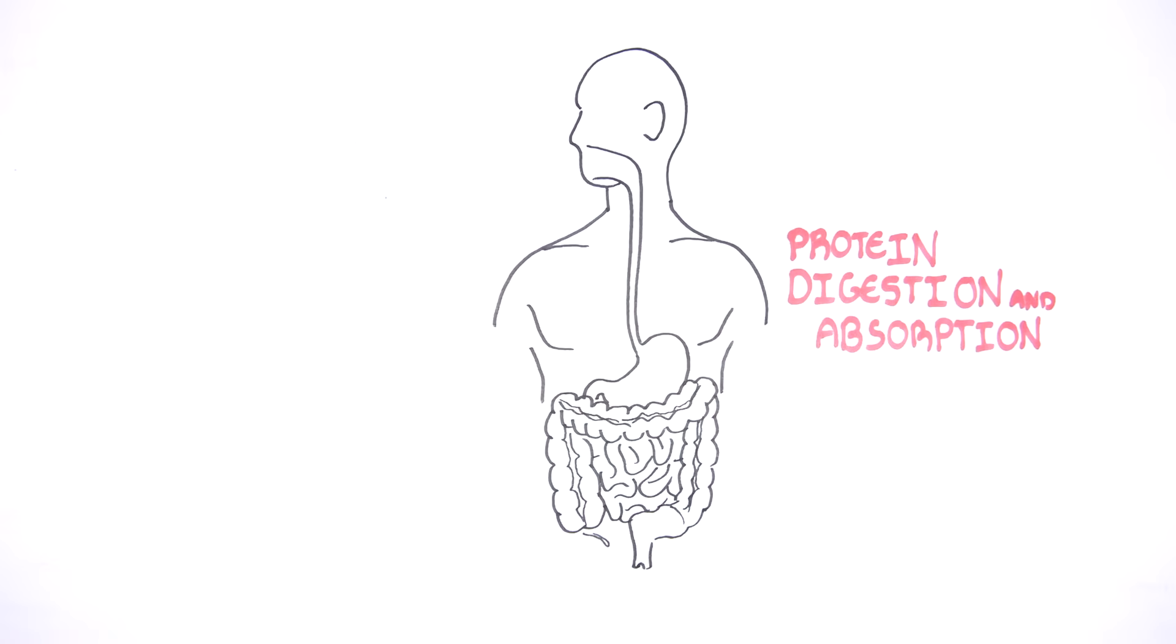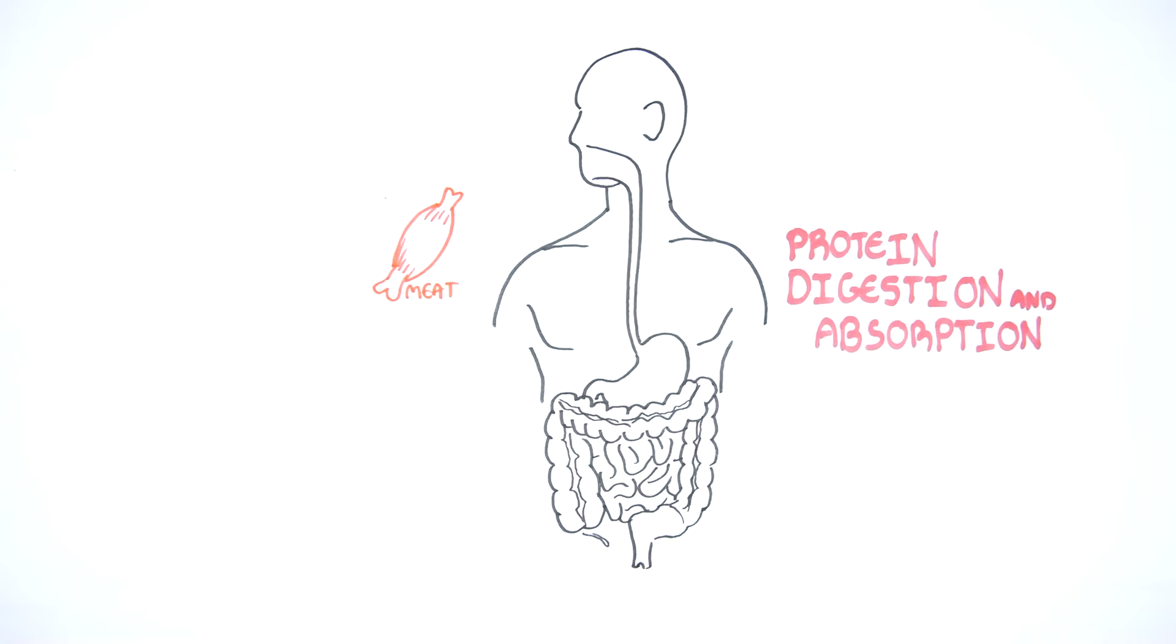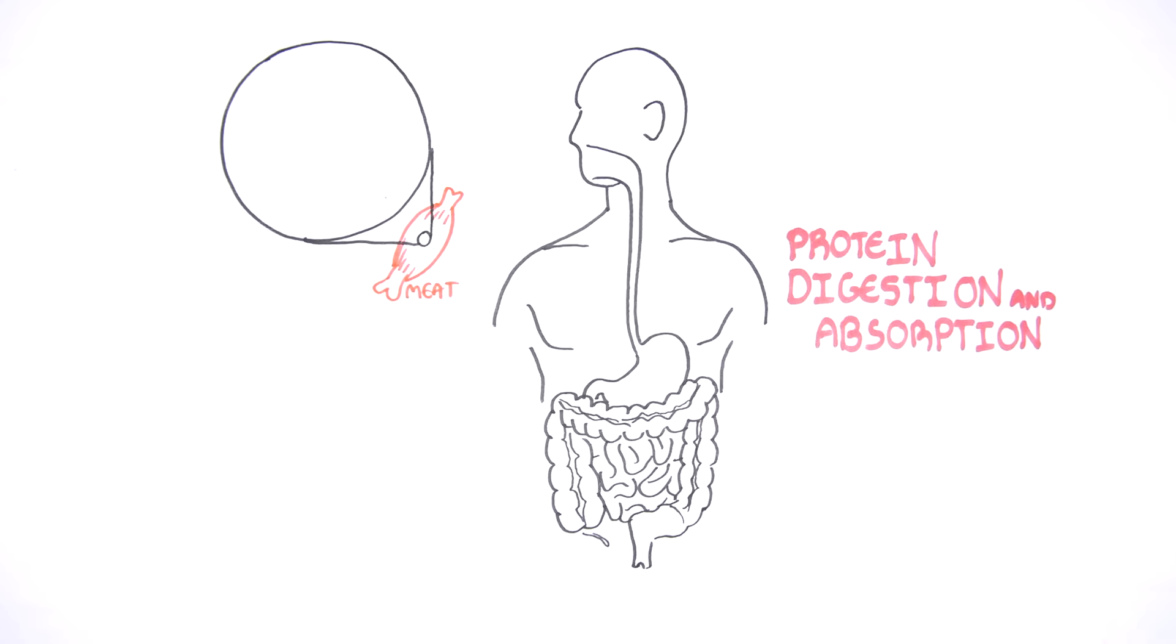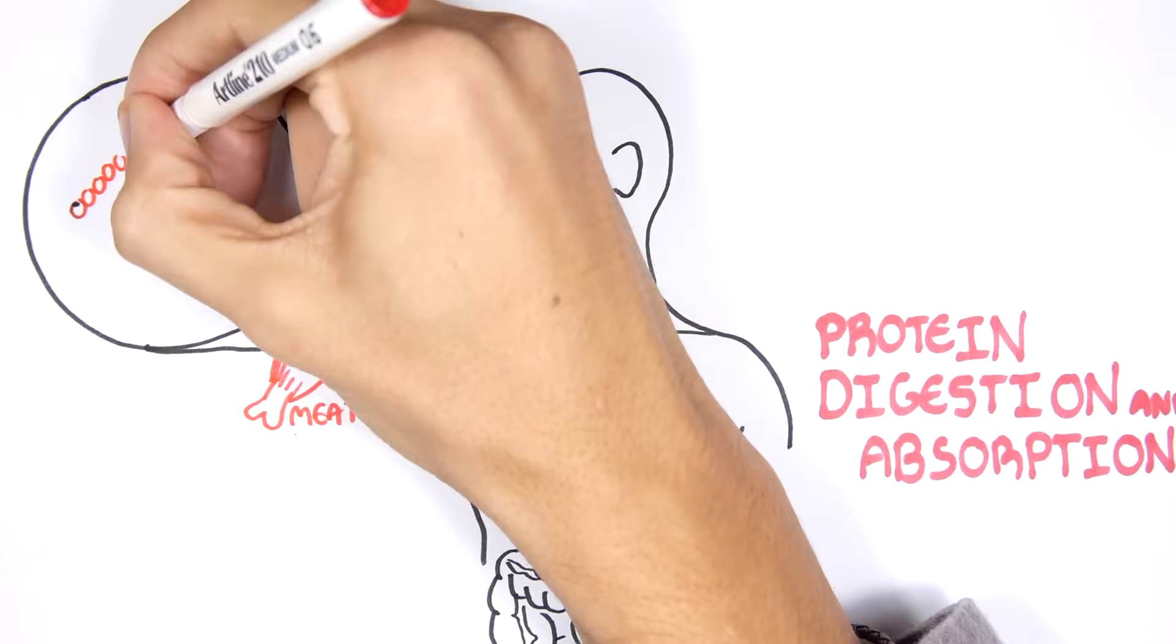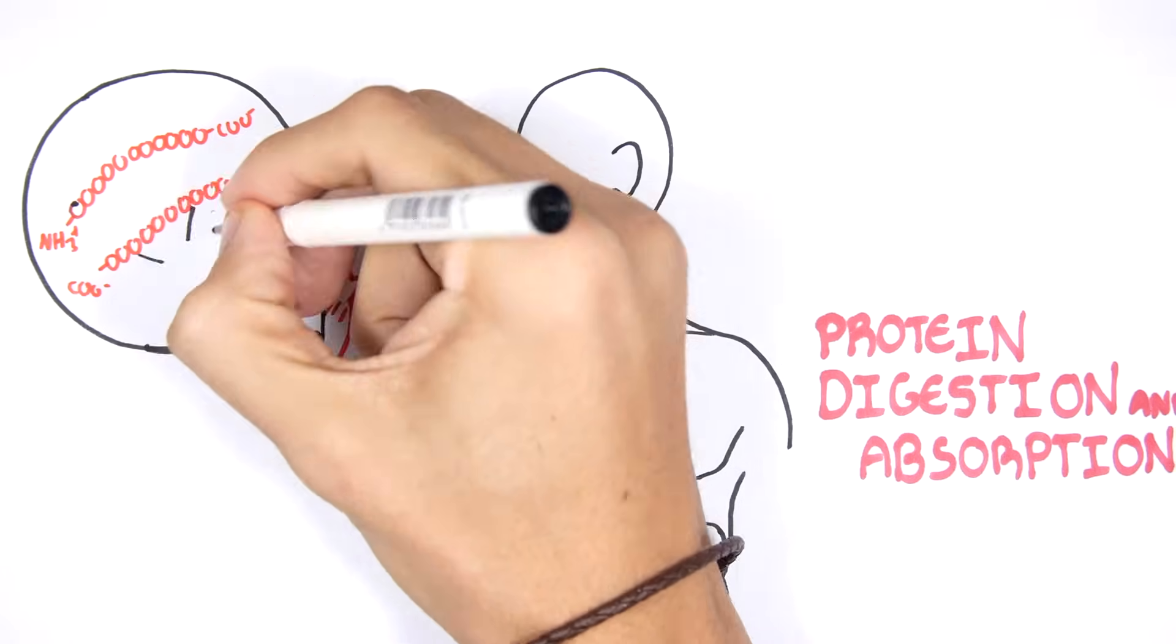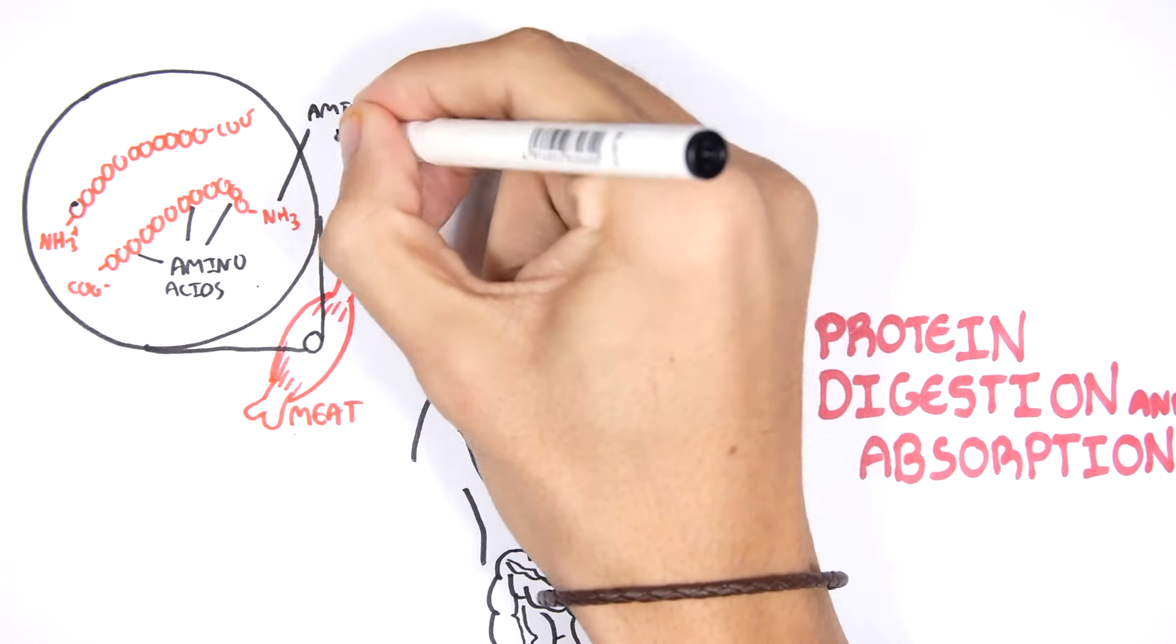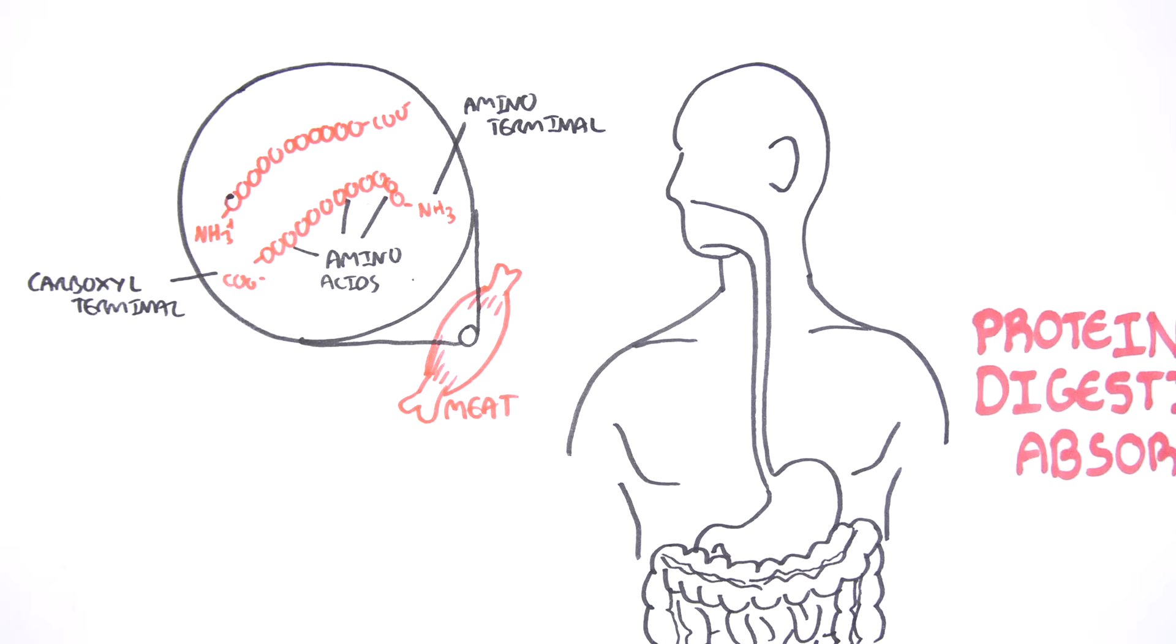A good source of protein can be found in foods such as meat. If we zoom into this meat, part of the meat is made up of proteins. Proteins are made up of amino acids. Proteins are basically chains of amino acids. Proteins have an amino terminal where the amine group is and then they have a carboxyl terminal where the carboxyl group is.